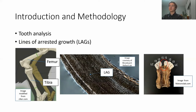The teeth were shipped to a lab to determine the actual age of each individual, while samples of the femur and tibia were processed into thin sections so I could analyze their cellular structure. I counted the number of lines of arrested growth present in each bone to determine if the femur or tibia was more reliable for age dating female Rocky Mountain Elk.